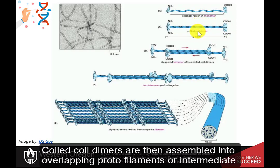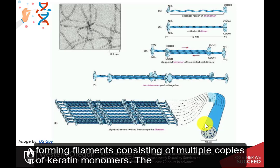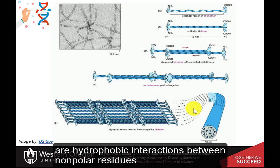Coiled-coil dimers are then assembled into overlapping protofilaments, or intermediate filaments, in a very stable, left-handed superhelical motif, which further multimerizes, forming filaments consisting of multiple copies of keratin monomers. The major force that keeps these multiple coiled-coil structures associated with one another are hydrophobic interactions between non-polar residues along the keratin's helical segments.